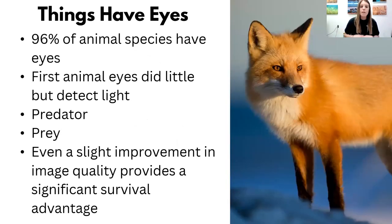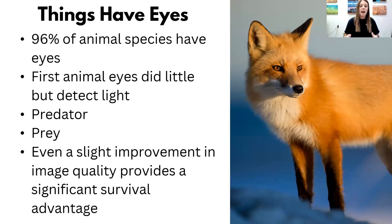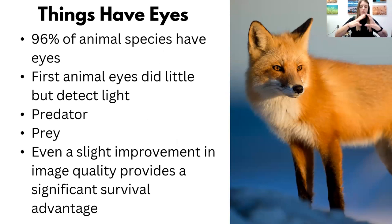When we talk about animal species, there's about 96% of animal species that have an eye or have eyes. The variation of how complex those are is very different, but across the animal kingdom, about 96% of species have eyes.